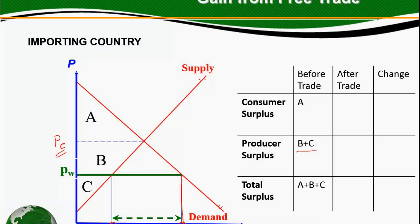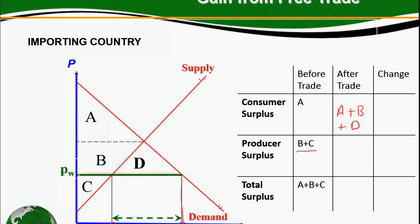After it opens up to trade, what is the consumer surplus? The consumer surplus in this case would be given by the area below the demand function and above the equilibrium price operating for this economy now. Since this economy faces the world price after trade, the consumer surplus is given by A plus B plus D. The producer surplus is the area above the supply function and below the world price, so it's C. The total surplus in this case is A plus B plus C plus D.